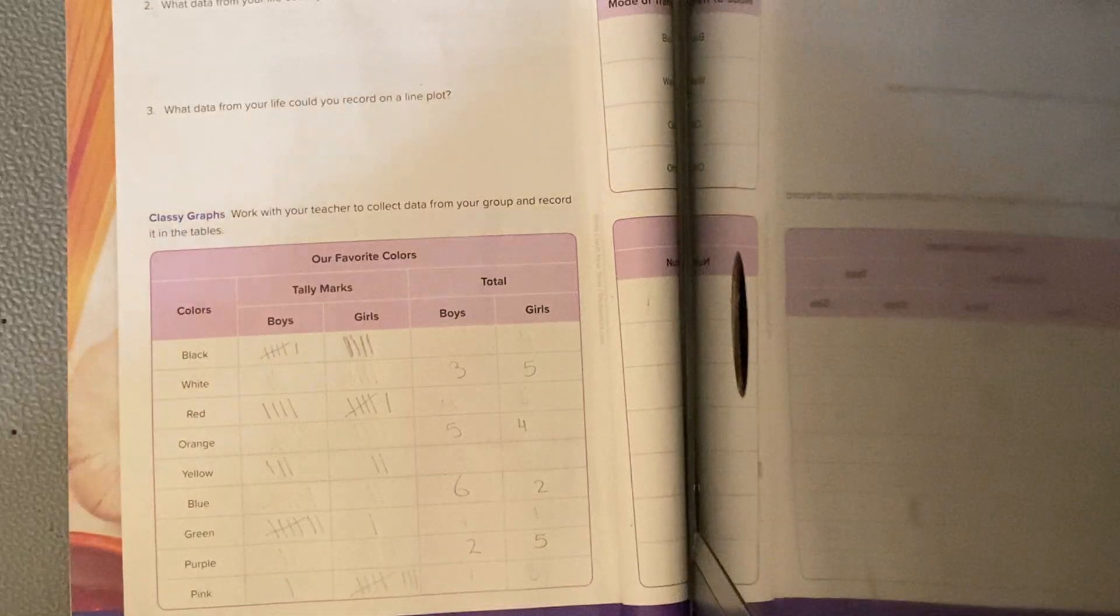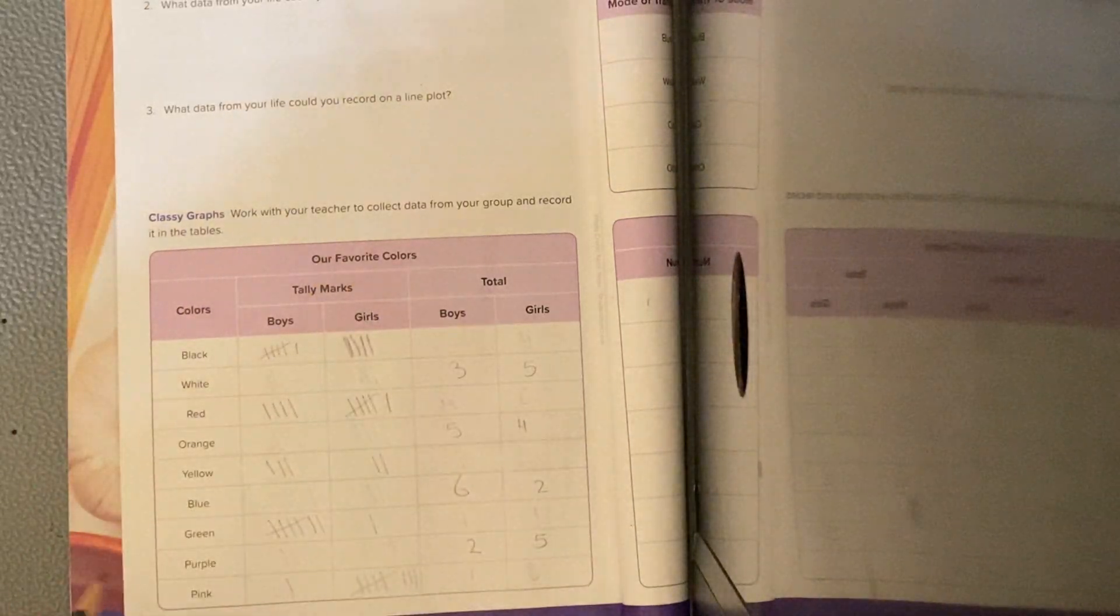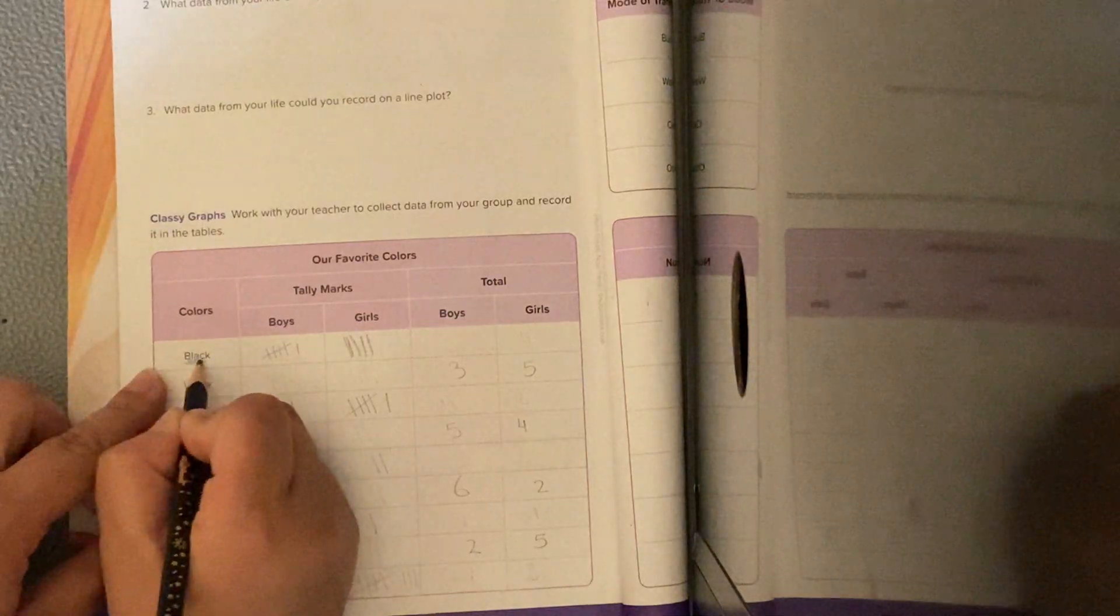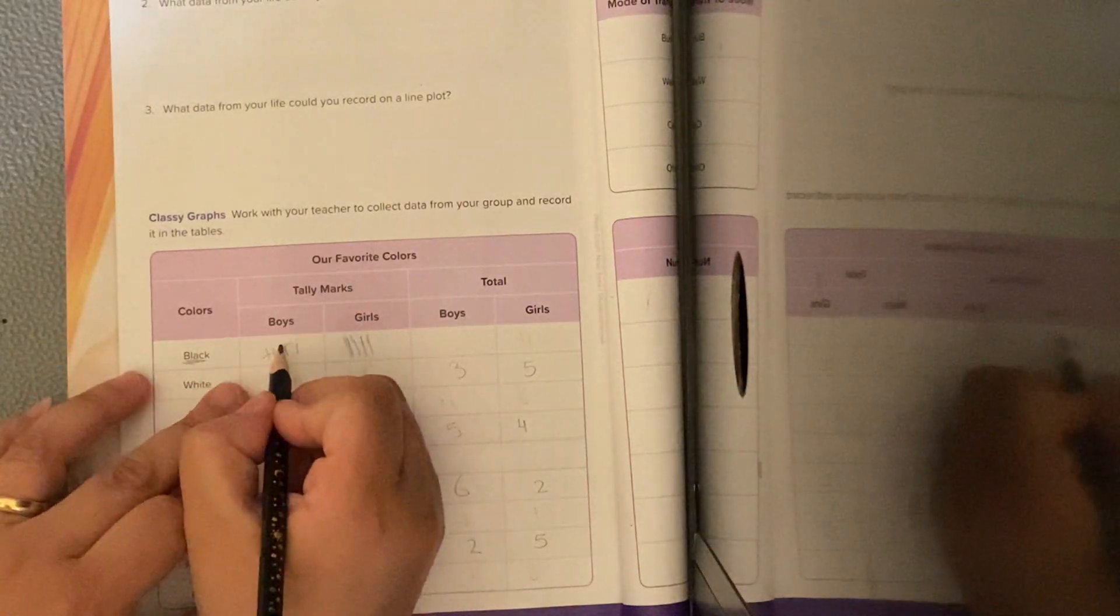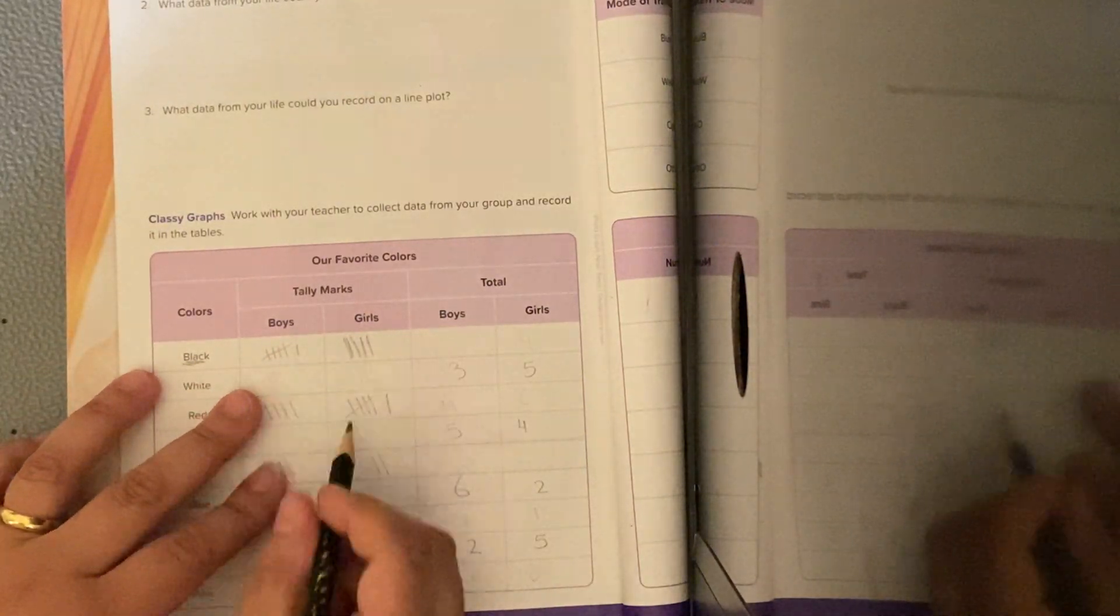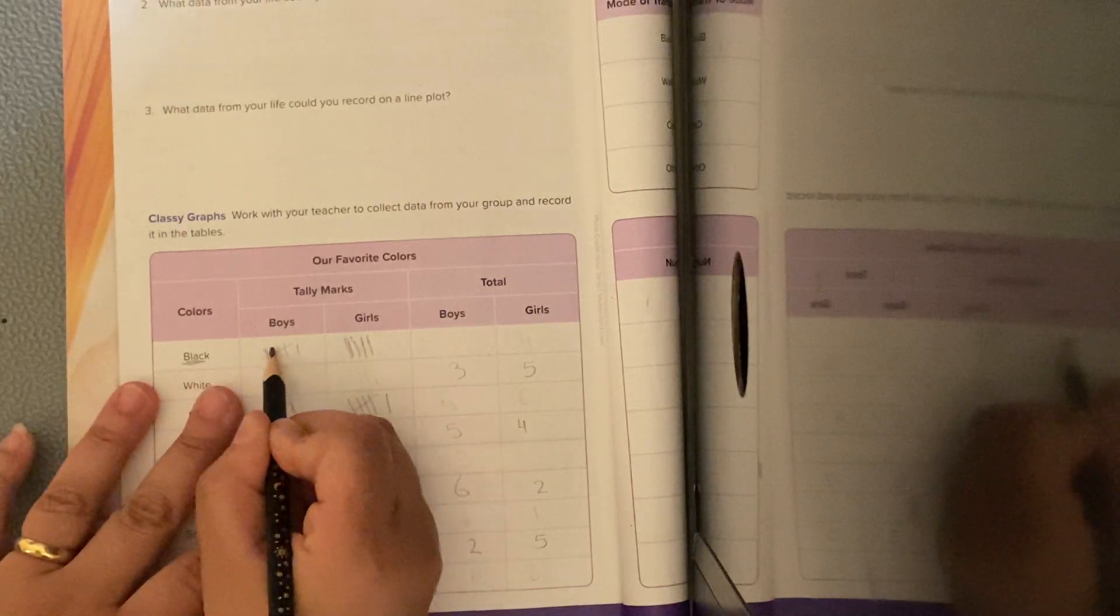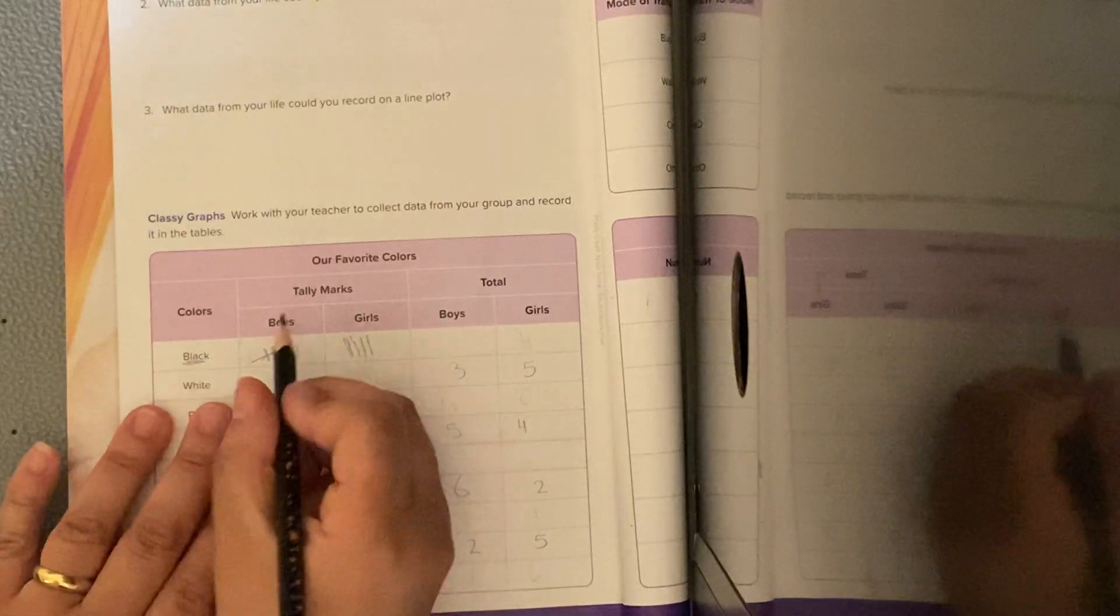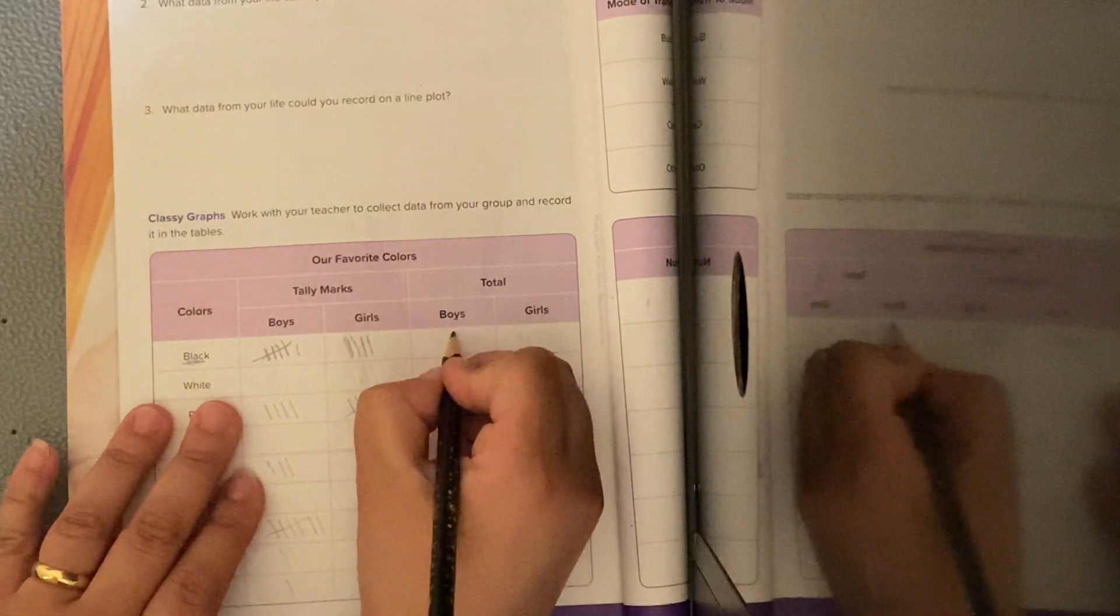We are going to do a survey about our favorite colors for the boys and the girls. For the black color, how many boys like the black color? Here is the tally mark: 1, 2, 3, 4, and the fifth one cross them, 5, 6. So how many for the boys? They are 6.